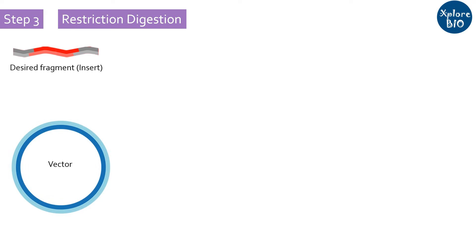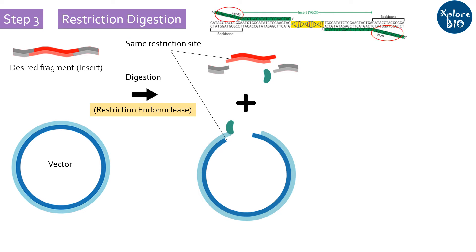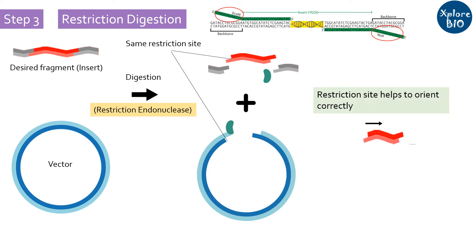The next step is restriction digestion of both the DNA fragments — the DNA insert and the vector. Both must be restriction digested using a suitable restriction endonuclease type 2. Restriction sites can also be created at both ends of the DNA insert during PCR amplification using primers with the restriction site sequence of interest. Care should be taken that the same restriction site is present in the vector where the target DNA is to be inserted. Restriction digestion helps to orient and ligate the target of interest in the right direction, which is essential for protein expression. For gene multiplication, the orientation of the ligated product is not essential.